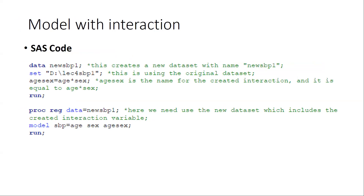Here is the SAS code to look at the interaction. First, we need a data procedure that creates a new data set named new_SPB1. We set the source data SPB1 and create a specific interaction term. The variable called age_sex is the interaction between age and sex. The reason we can multiply age and sex directly is that sex is a dummy variable taking values 0 and 1, where 0 is female and 1 is male.